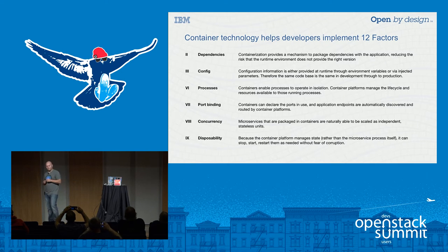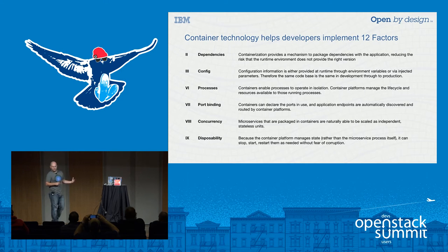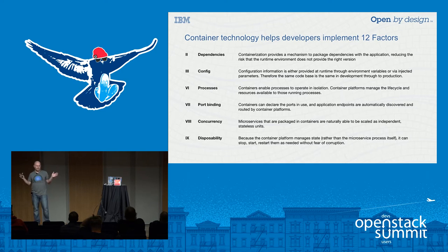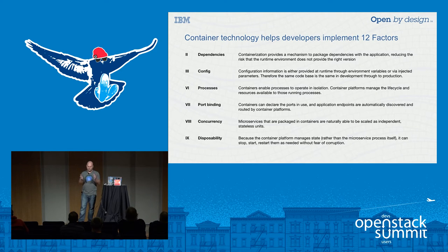Container platforms also provide a way for you to push your web application to somewhere where port 80 is mapped to it. And with some of the more advanced container platforms, there are lots of options now — you'll get a concurrency model that lets you scale and deploy your containers across either a fabric or a single system, scale up, scale out, whatever you need to do. The container technology will basically enforce that your container can just be treated as a process, isolated and destroyed as needed.